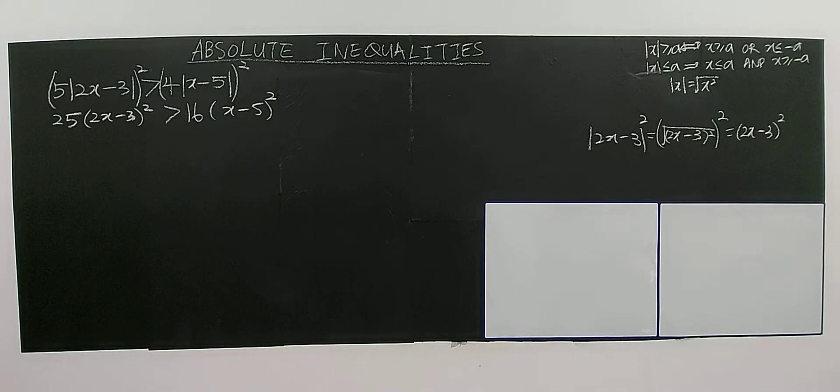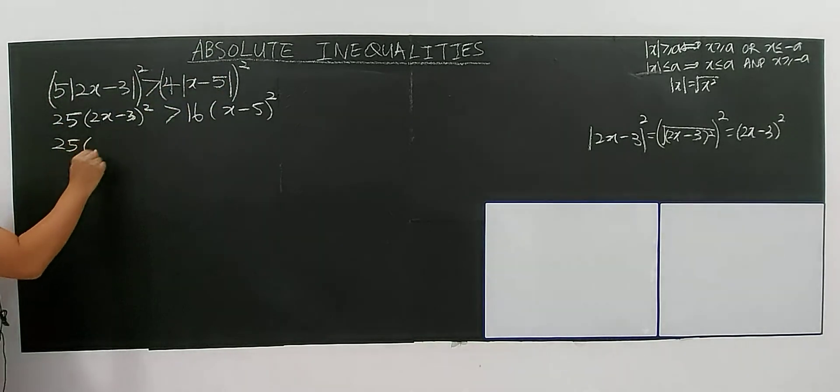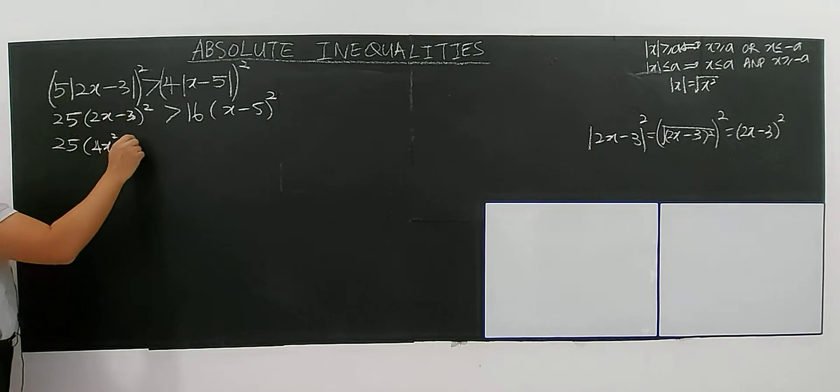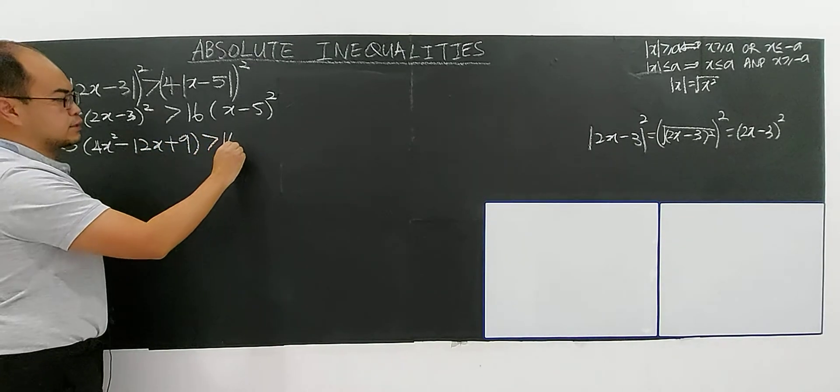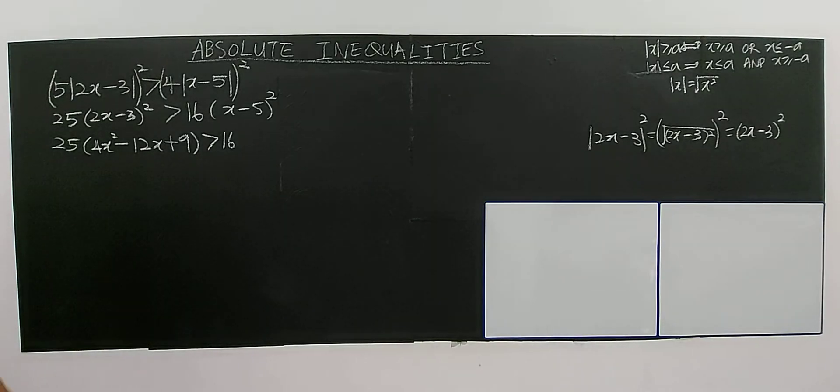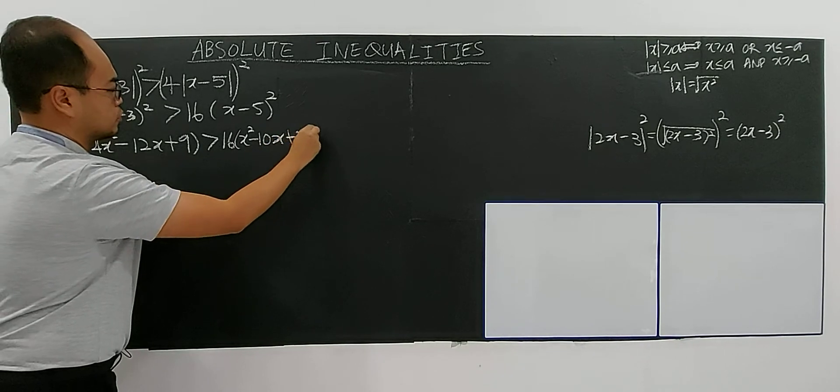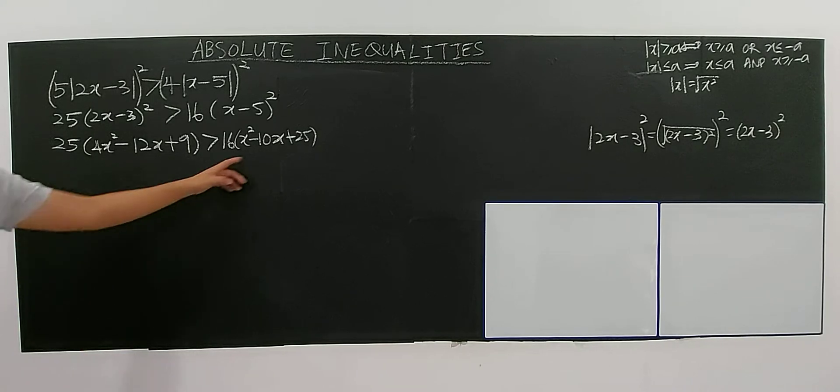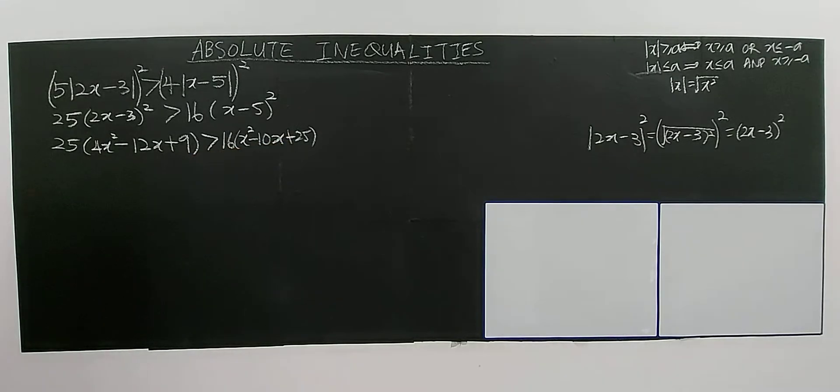So now you have 25, expand the bracket: 4x squared, 2 times 2 is 4, 4 times 3 is 12x plus with 9, greater than 16, 16x to the power of 2 minus 10x plus 25.